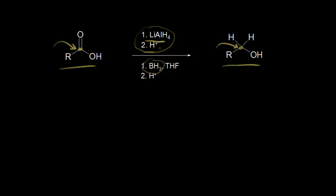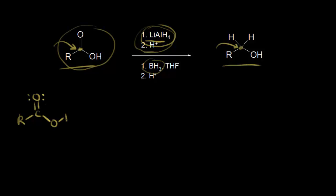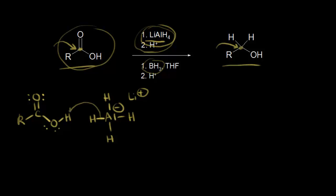Let's focus in on the possible mechanism of lithium aluminum hydride reacting with our carboxylic acid. Let's redraw our carboxylic acid — I'm going to put in our carbonyl, and then we know the acidic proton on our carboxylic acid is the one on the oxygen. Lithium aluminum hydride can be a strong base, so I'm going to draw in aluminum with four bonds to hydrogen, giving it a negative one formal charge, and then we have our lithium Li+. A hydride is a hydrogen with two electrons, and we know that's a strong base, so you could think about these two electrons taking this proton and leaving these two electrons behind on your oxygen.